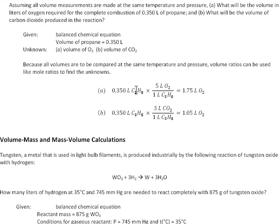For part A, we start with 0.35 liters of propane. We multiply it by the volume ratio of five liters of oxygen to one liter of propane to get 1.75 liters of oxygen.